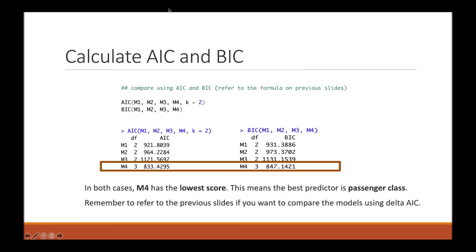So once you have run the models from the previous slide, we can compute the AIC and BIC scores using the formulas mentioned previously. As you can see, in both cases, M4 has the lowest score. So this means the best predictor of whether someone survived or not was passenger class. You can also refer to the previous slides if you want to compare the models using Delta AIC.